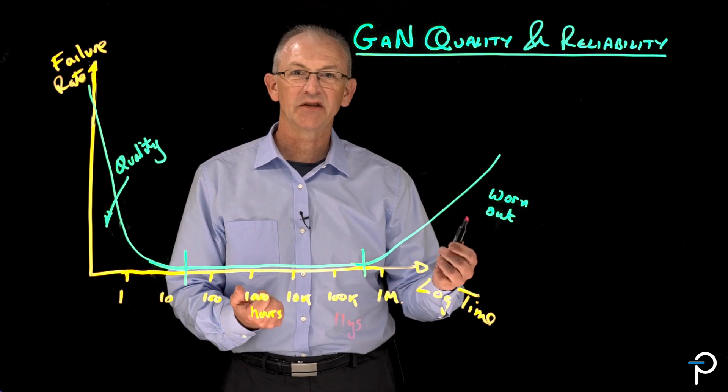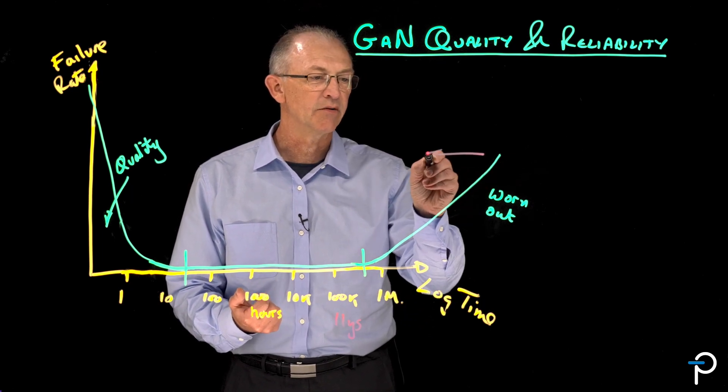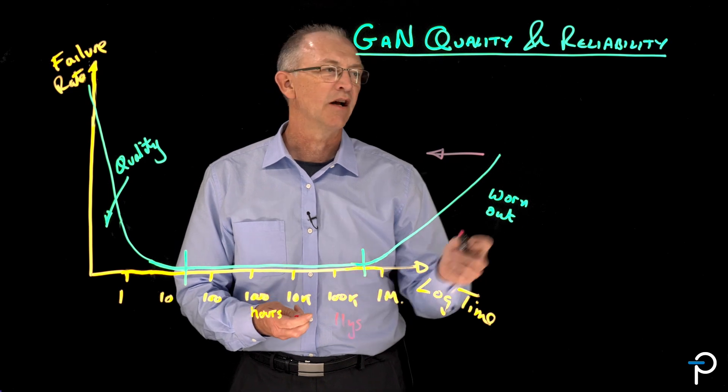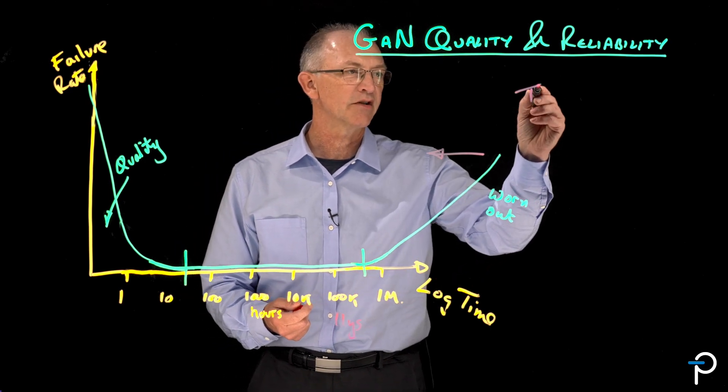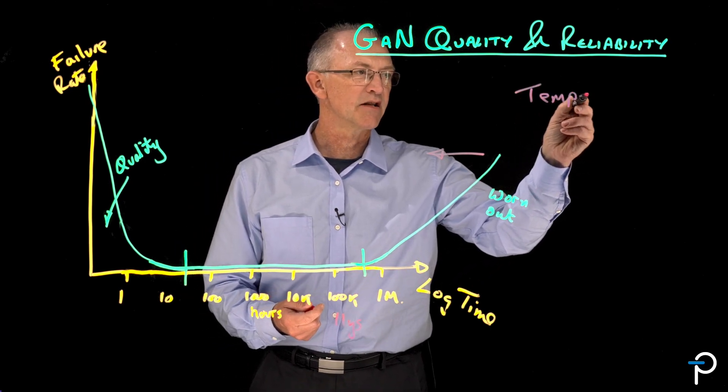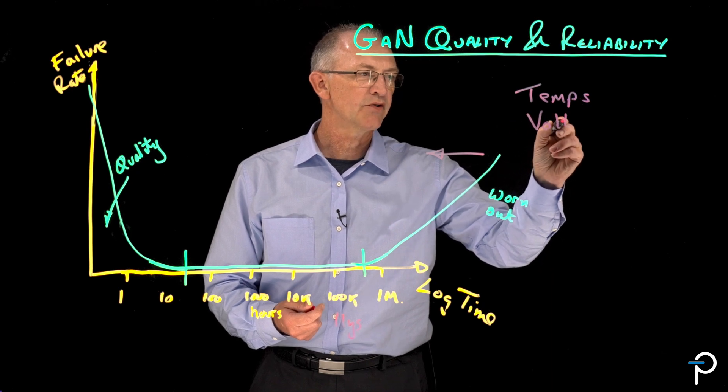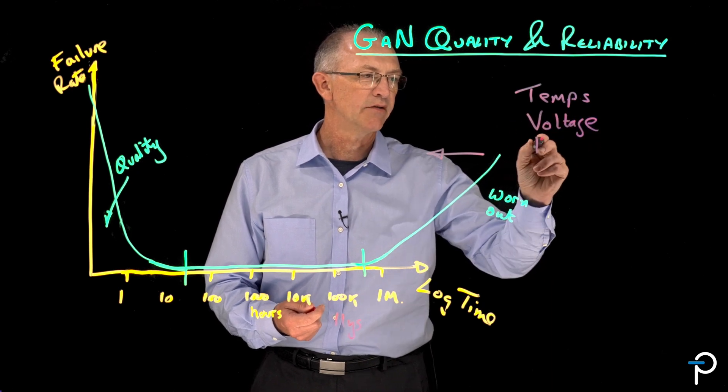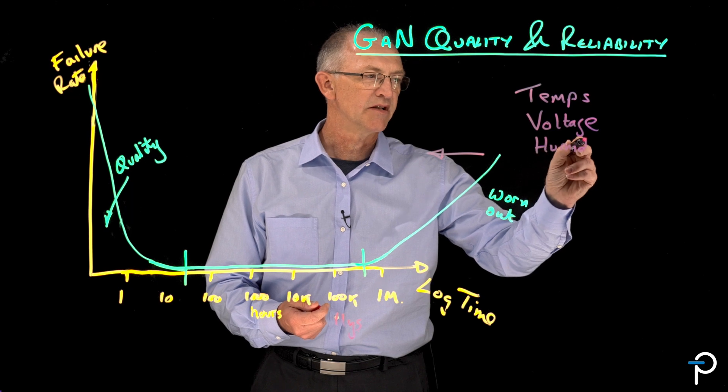So the best thing to do here is we have to find a way to accelerate time. And the way we accelerate time in the semiconductor industry is we heat things up, we apply voltage to them, and we use humidity.